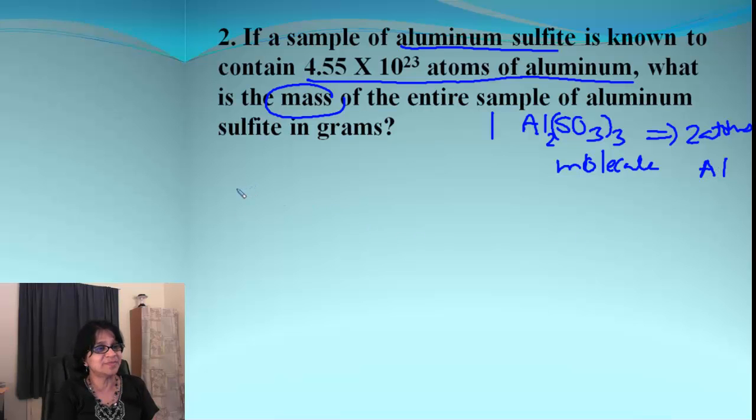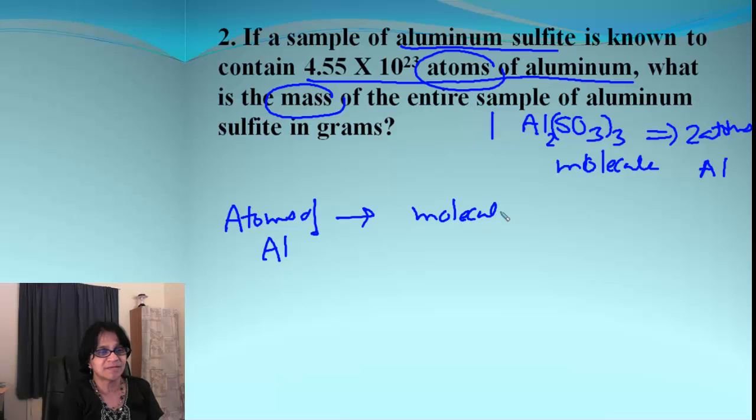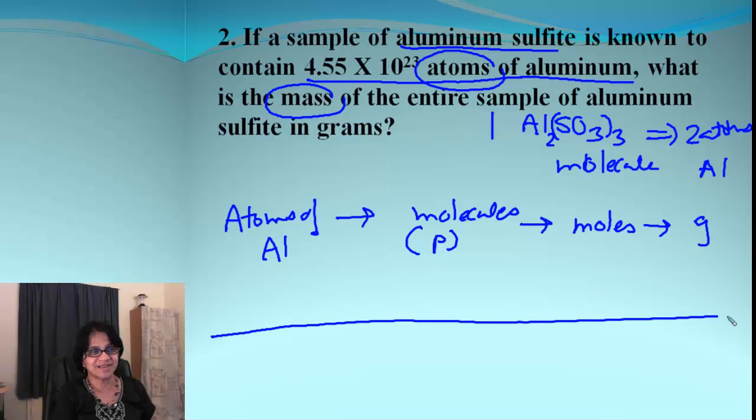So, let's get the roadmap. And when we start roadmap, think about that. Now, these atoms is our beginning point. So, I start with atoms of aluminum. From there, we are actually going to molecules or which we call as particles. And now, it's simple. From particles, we go to moles. And from moles, we go to grams.